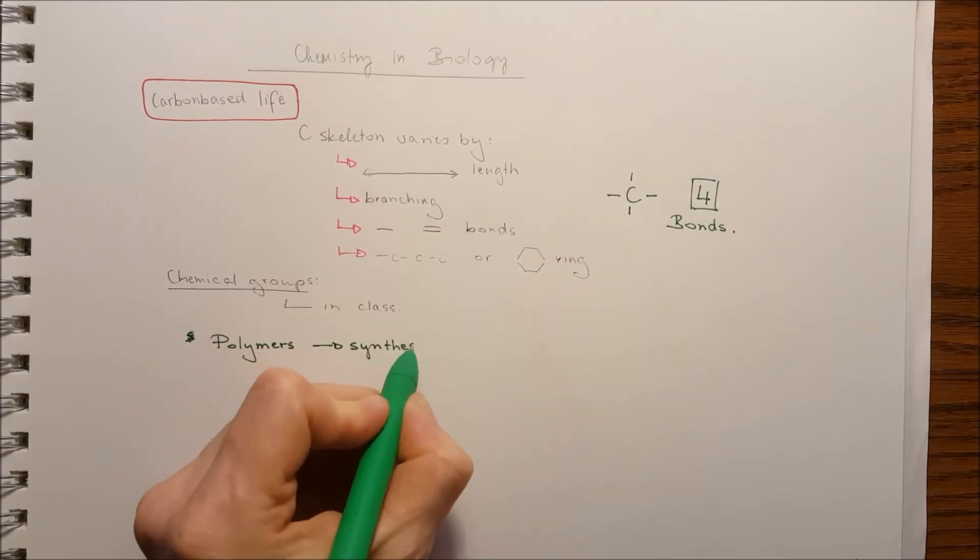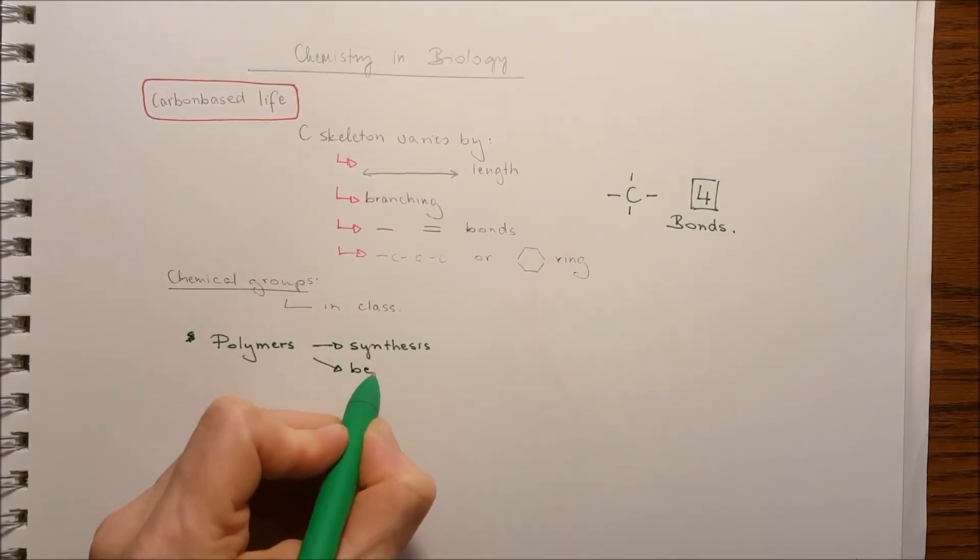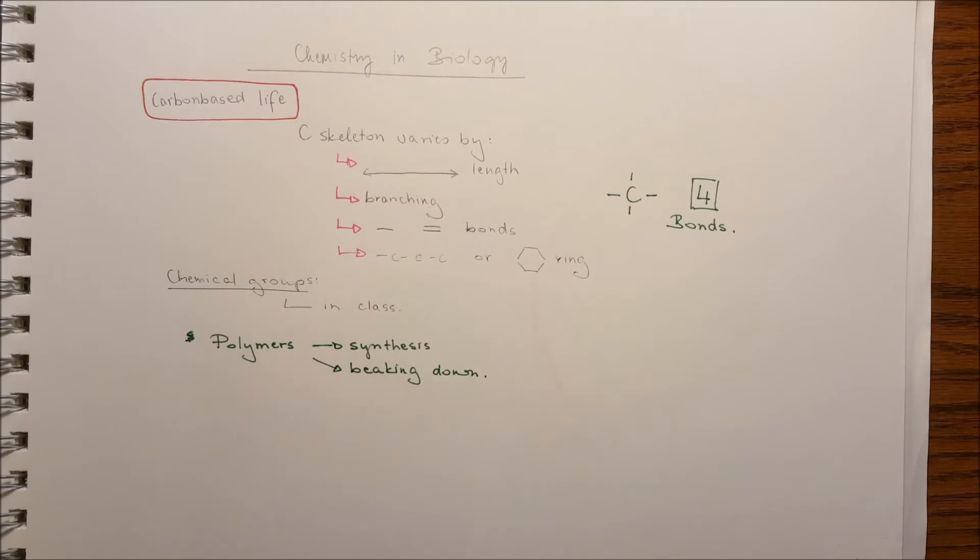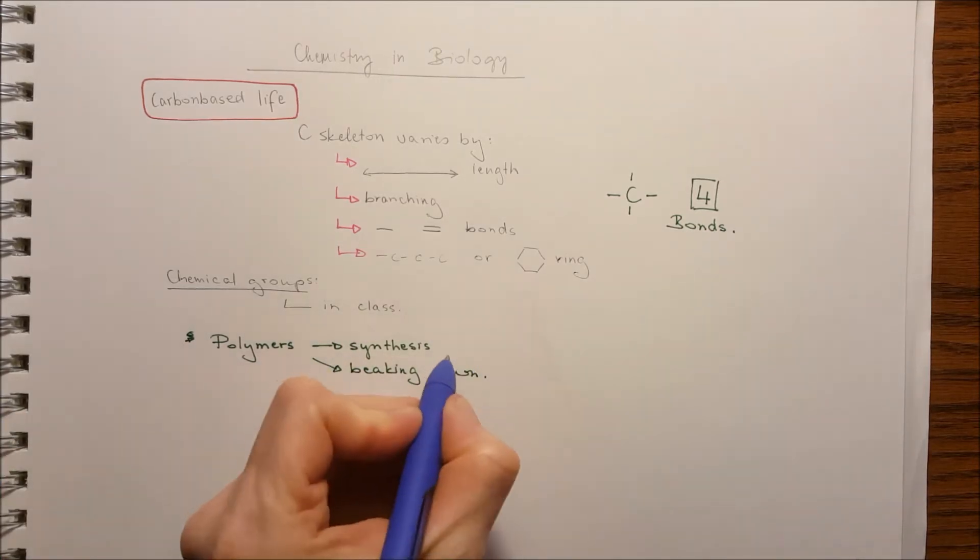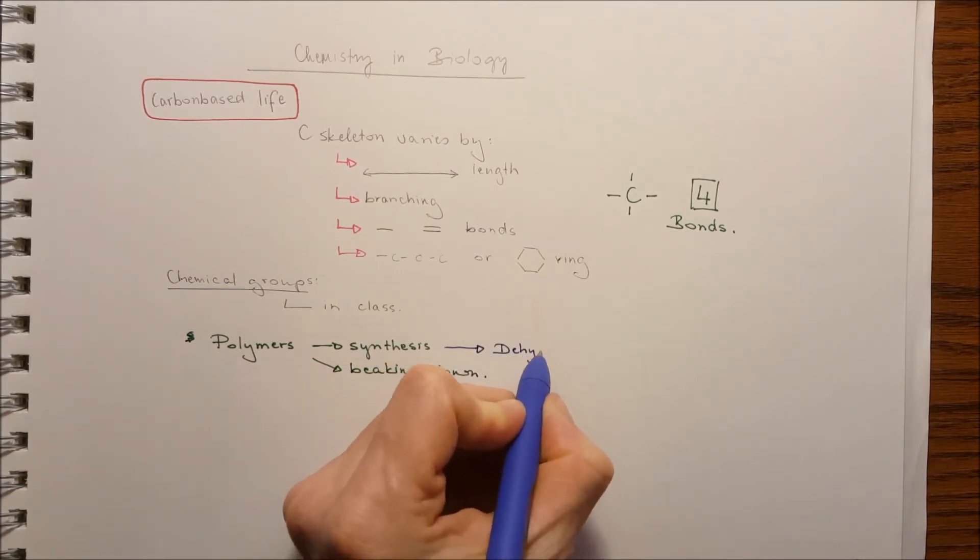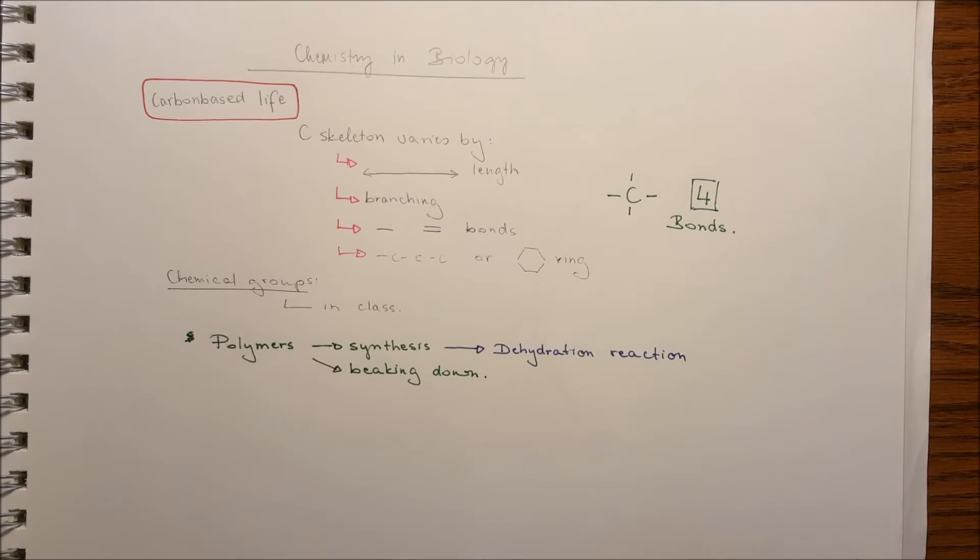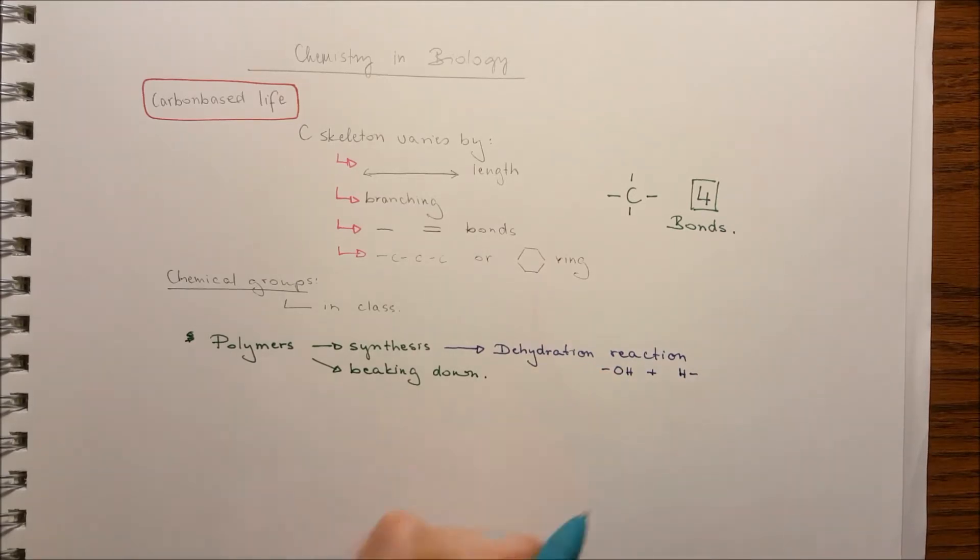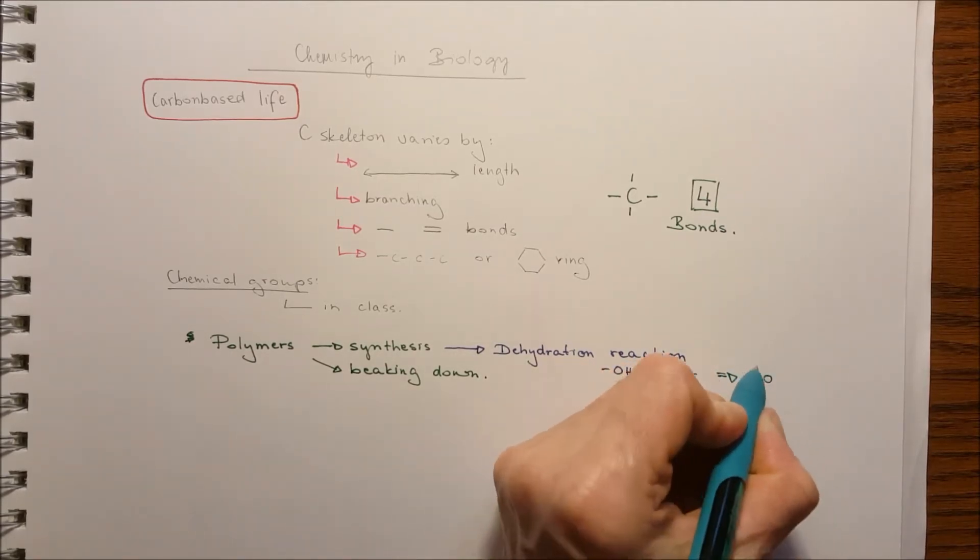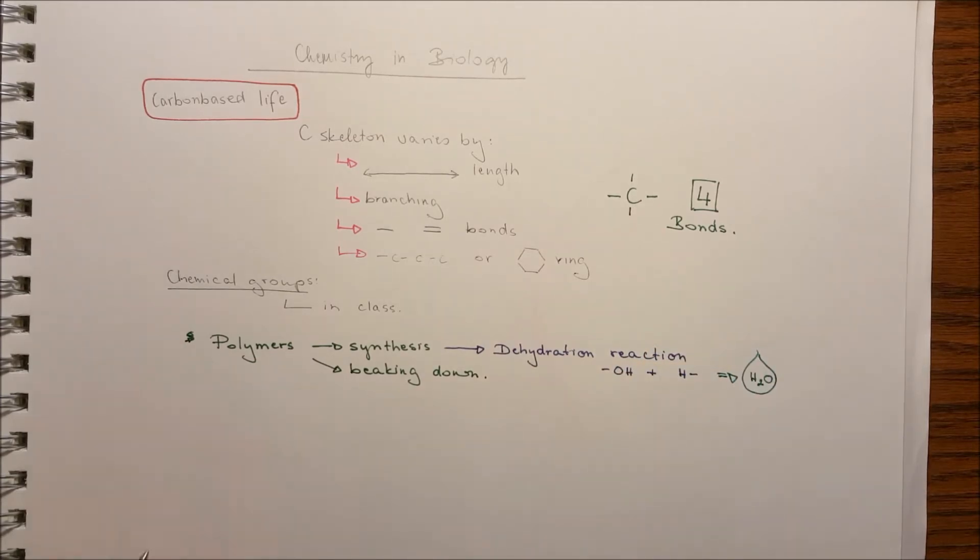So the polymers, we will discuss the synthesis of the polymers and how they break down. Polymer, so the synthesis to make polymers, many monomers bind together, is happening by dehydration reaction. For example, the hydroxide and hydrogen binds together to form water.